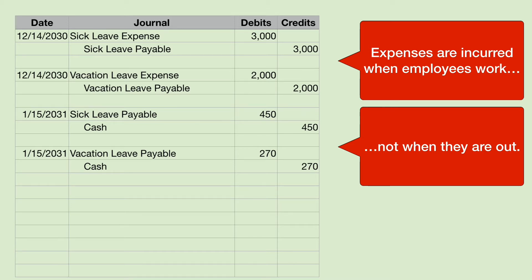What we do is we accrue sick leave and vacation leave as expenses when they are working. When they are out and not working, we just pay them cash and do not debit an expense. We just debit the payable and pay them cash.